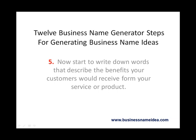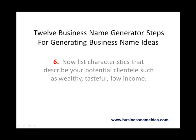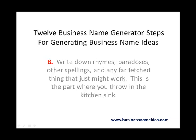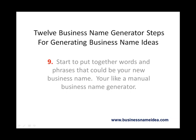Step five: write down words that describe the benefits your customers would receive from your service or product. Step six: list characteristics that describe your potential clientele, such as wealthy, tasteful, or low income. Step seven: write down your name — yes, your name — you can see where it might play later. Step eight: write down rhymes, paradoxes, other spellings, and any far-fetched things that just might work. This is the part where you throw in the kitchen sink.